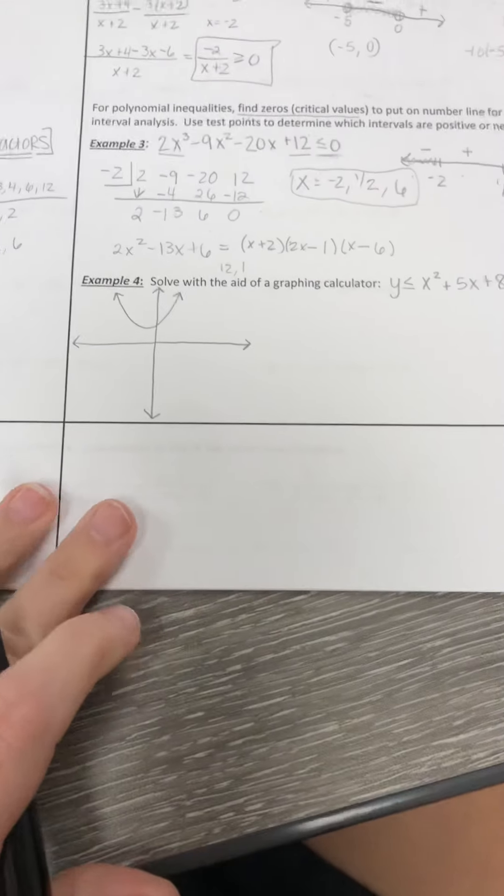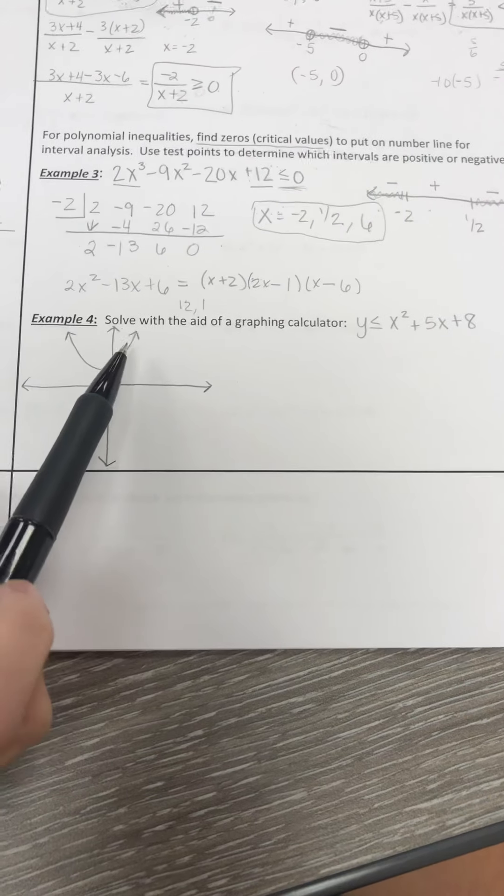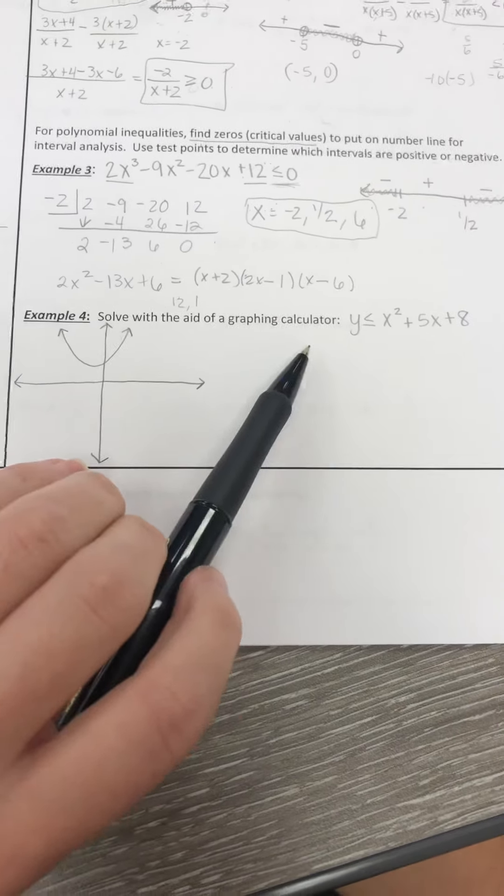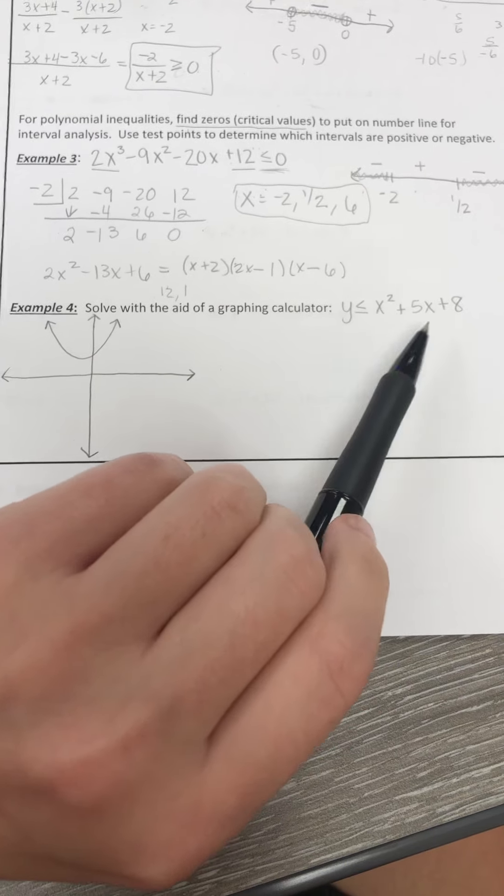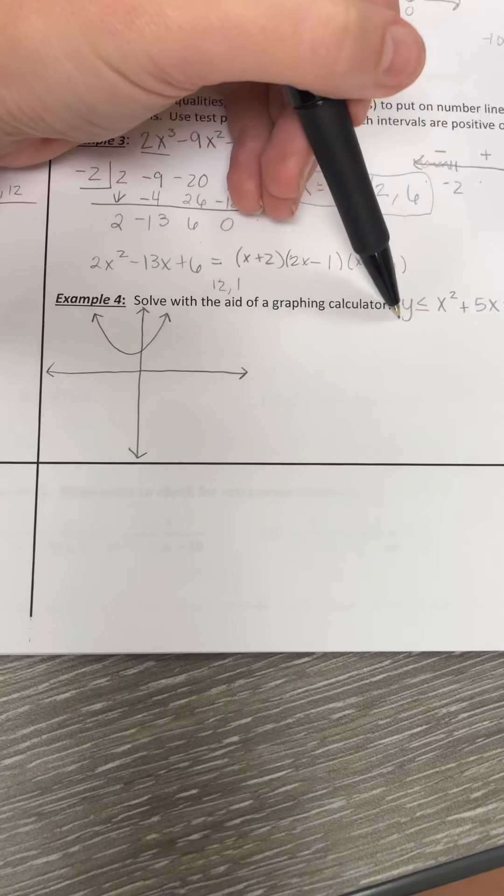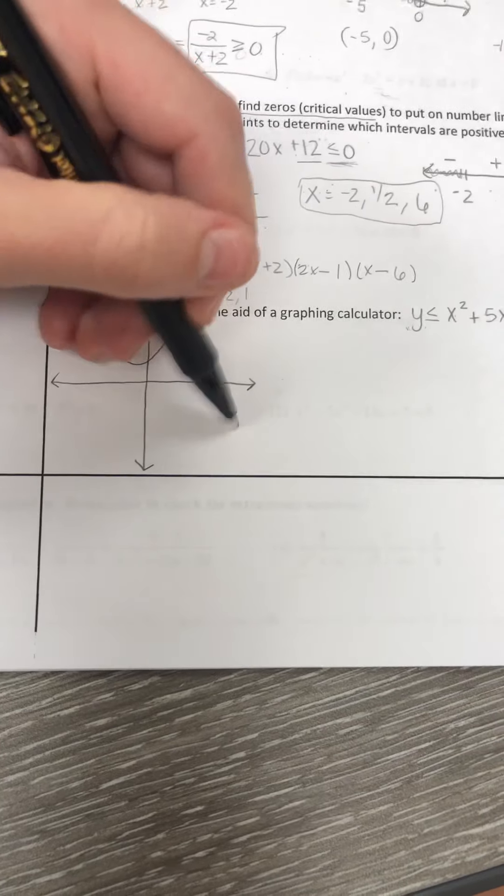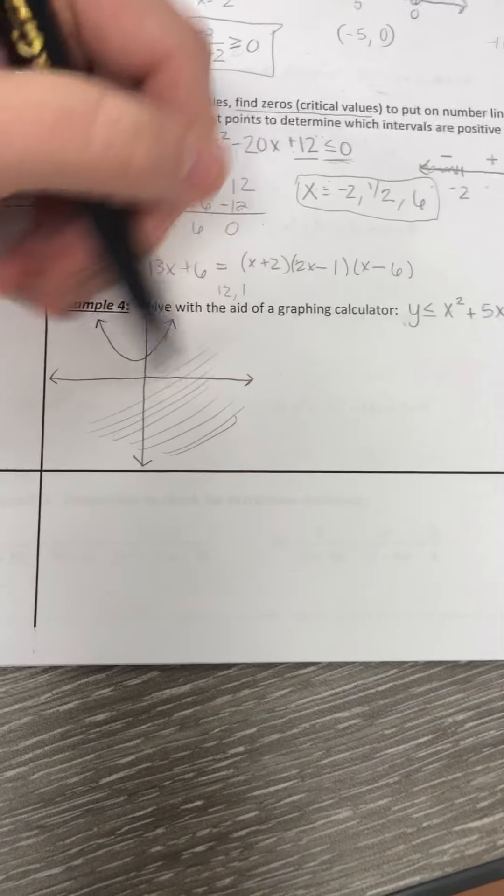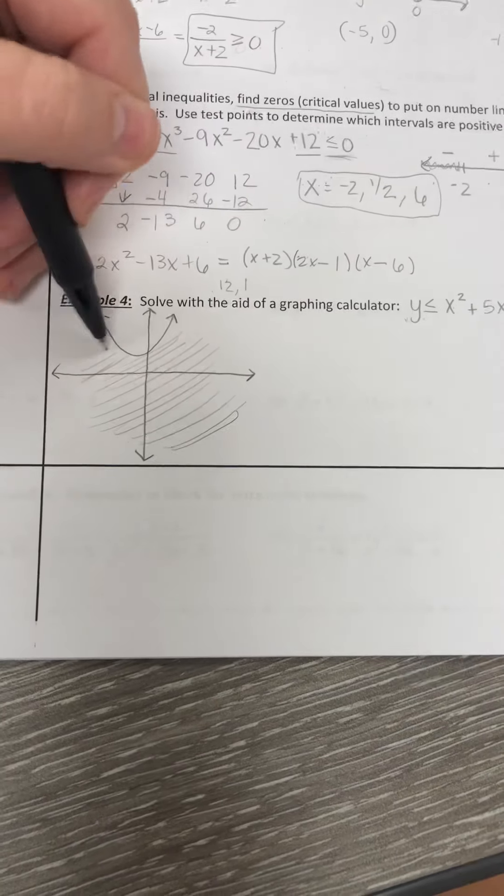Alright, down on example 4. This one is very simple. It says to solve with the aid of a graphing calculator. When you plug this in, you will get a graph like this one. And because we are looking for y values that are less than or equal to the graph, that's going to include everything that is underneath the given graph.